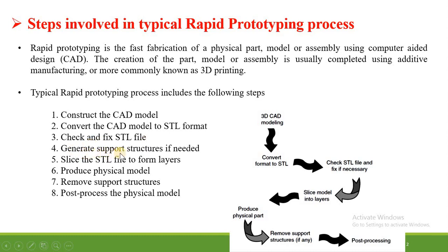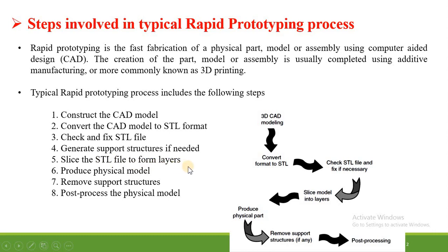The next step is generation of a support structure if needed. While generating the layer-by-layer structure, we need to provide some support structure to avoid loss of dimension or disturbance in the manufacturing. The following step is to slice the STL file to form layers. The STL file format uses conversion of the CAD model into slice-by-slice information to provide that information to the 3D printing machine.